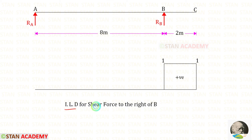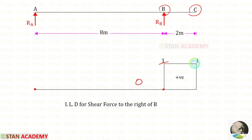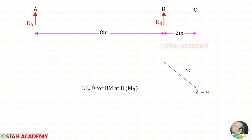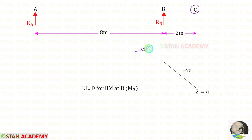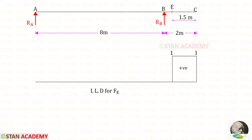Now let us draw the ILD for the shear force to the right of B. From point A to point B it will be 0, and from point B to point C it will also be 0. At point C it will be minus A — A is 2, so minus 2. Now let us draw the ILD for the shear force at point E. From A to E it will be 0, and from E to C it will be 1.